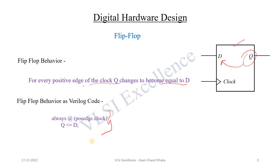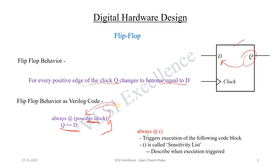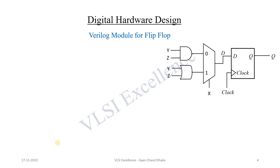Now let's see how we can specify this flip-flop behavior in Verilog. In Verilog: always at the positive edge of the clock, q will be assigned the value of d. The important point is that to specify sequential logic, specifically flip-flops, we have to use edge-sensitive signals in the sensitivity list of the always block. This is what gets realized into a flip-flop during synthesis. The sensitivity list describes when execution triggers — here the clock is specified as a positive-edge sensitive signal, so whenever a positive edge occurs on the clock, this block executes.